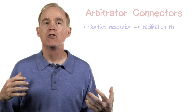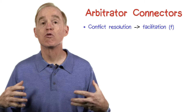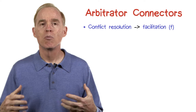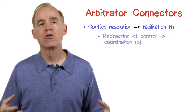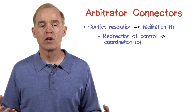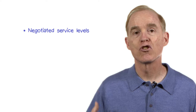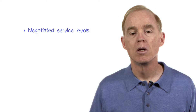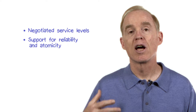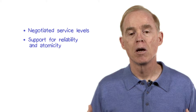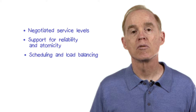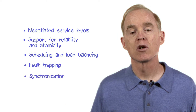A powerful category of connector are arbitrators. These are primarily responsible for facilitation services. But because they can redirect control, there's also a coordination service they provide. You might be able to use them to negotiate service levels — that is, how much resources are being devoted to a particular problem. Hence, they support reliability and atomicity, scheduling and load balance, trapping of faults, and even synchronization.